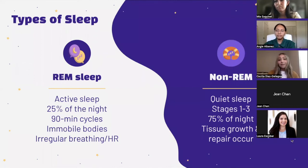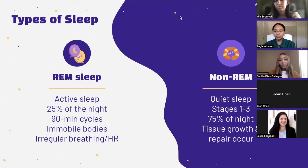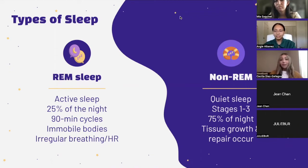Non-REM sleep is our quiet sleep, lasting about 75 percent of the night. Non-REM sleep has three stages: stage one is the changeover from wakefulness to sleep; stage two is a period of light sleep before entering deeper sleep; and stage three is a period of deep sleep that you need to feel refreshed in the morning.